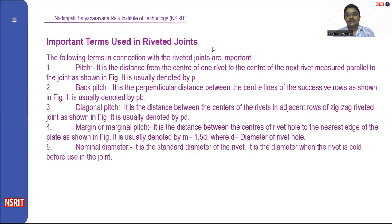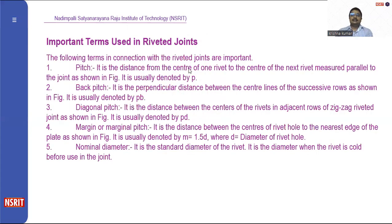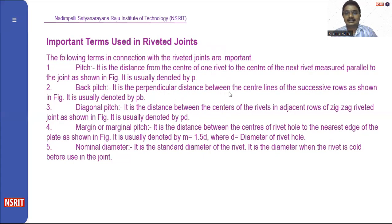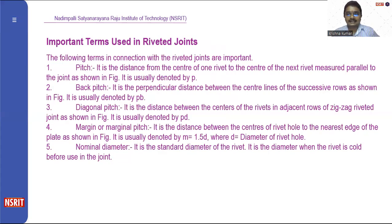Now, the important terms used in riveted joints. Pitch (P): it is the distance from the center of one rivet to the center of the next rivet, measured parallel to the joint. Back pitch (Pb): it is the perpendicular distance between the center lines of successive rows, denoted by Pb. Diagonal pitch (Pd): this is the diagonal axis measurement.